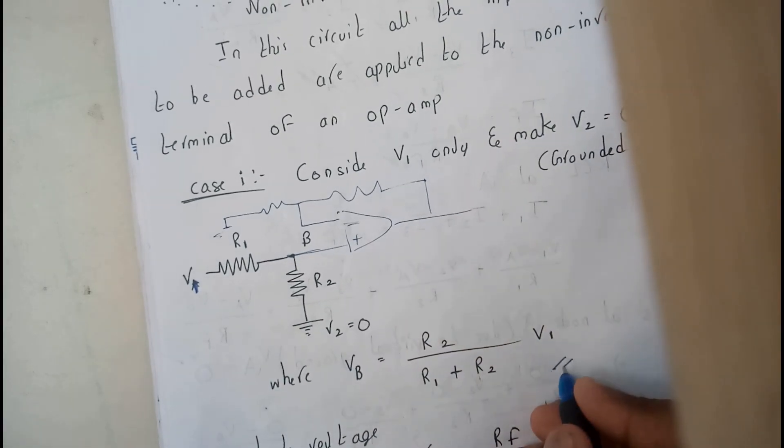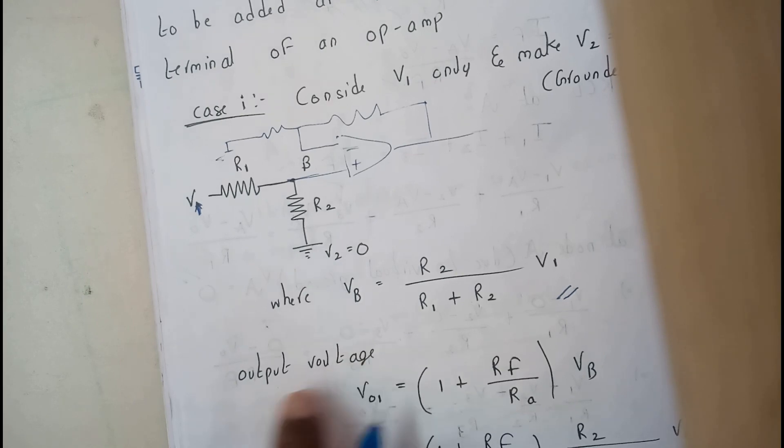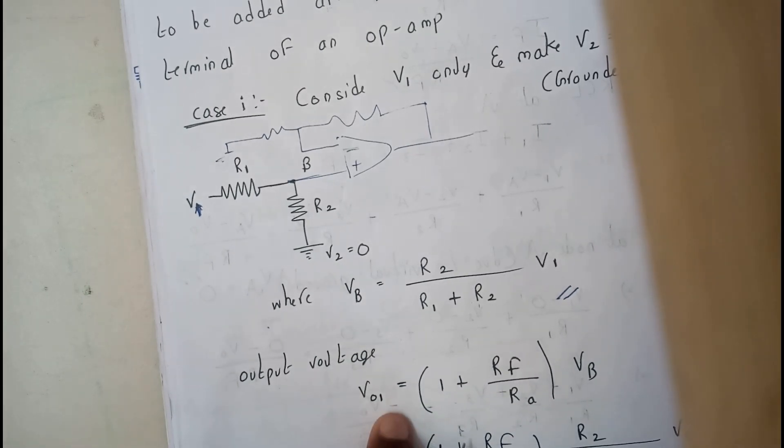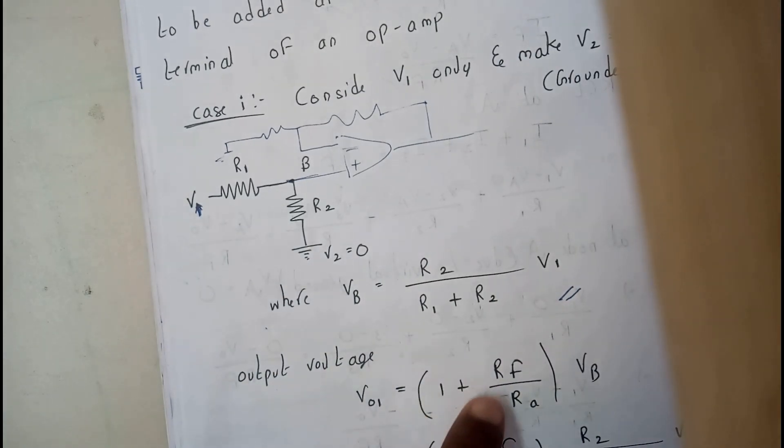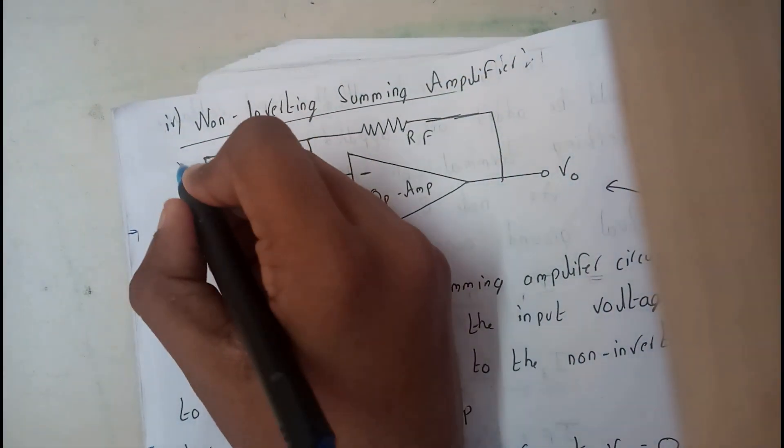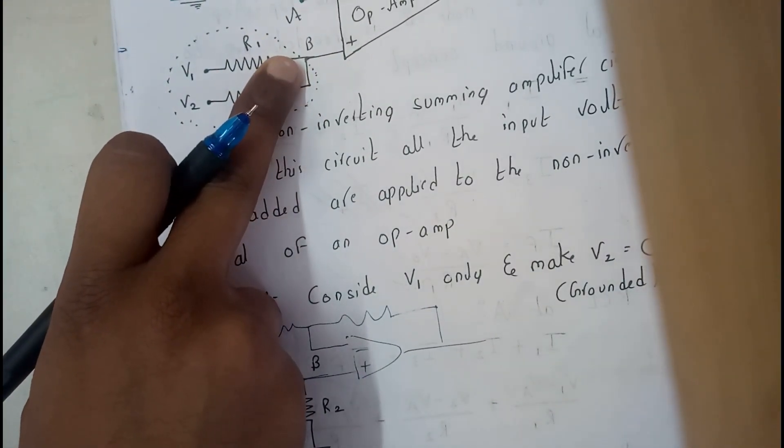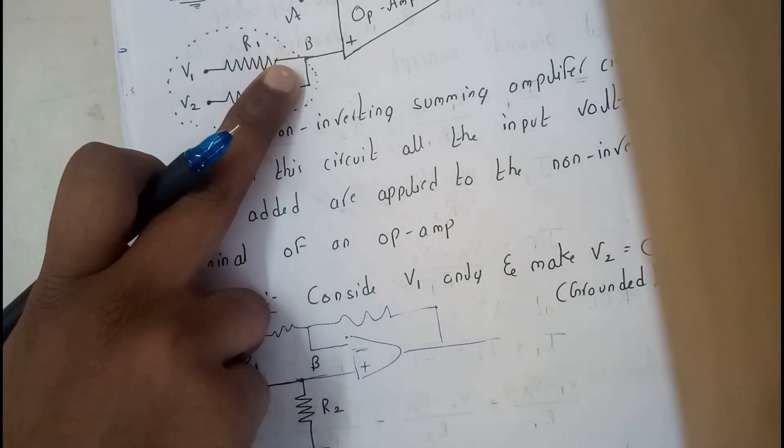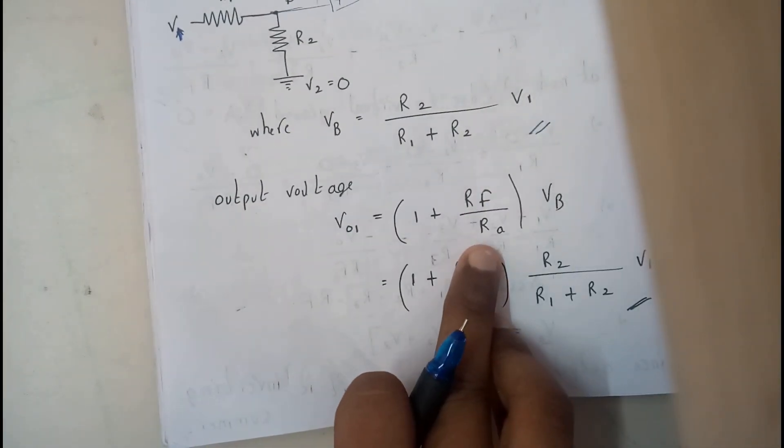I hope everyone got this equation. The output voltage V01, we assume that this as V01. So V01 is nothing but 1 plus Rf by Ra. In the first case V01 is nothing but VB into 1 plus Rf by Ra.